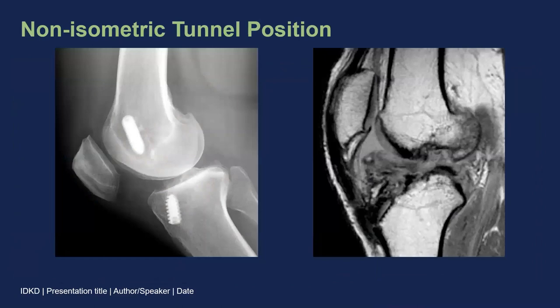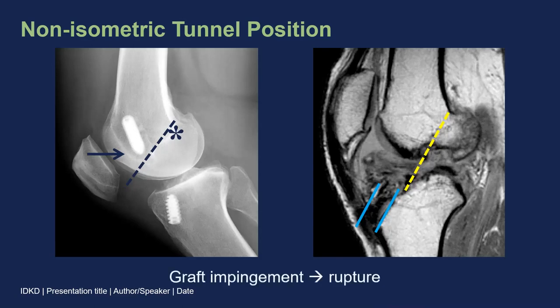Another problem is if tunnels are too far anterior. In this example, there's Blumensatz line, and the femoral tunnel is well anterior to Blumensatz line with surrounding osteolysis. In the second example, the tibial tunnel is now anterior to Blumensatz line, and this anterior tunnel position can lead to graft impingement along the roof of the intercondylar notch and eventually to graft rupture.